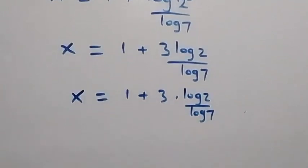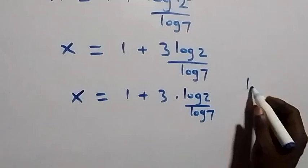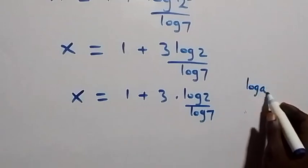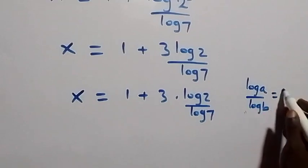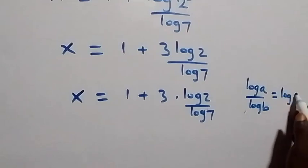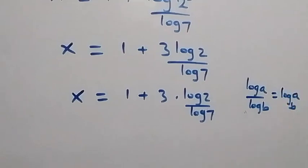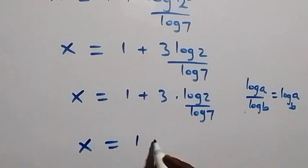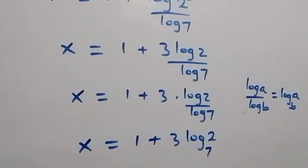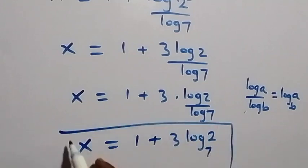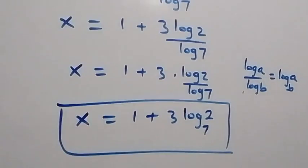Applying the change of base rule — log a over log b can be written as log a to base b — what we have becomes x equals 1 plus 3·log 2 to base 7. So here we have the value of x as 1 plus 3·log₇2.